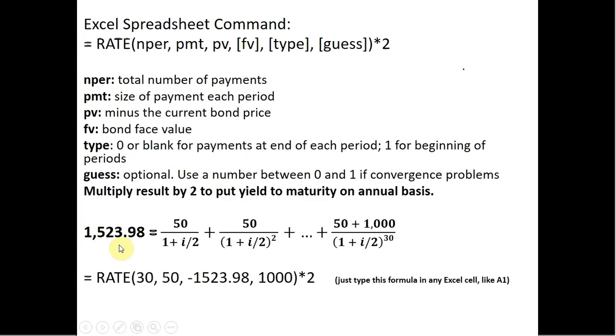So once again, this is our math equation, taking that information and plugging it into the formula. 30 is the number of periods. 50 is the payment. The current bond price, it's minus 1523.98. The face value is 1,000.